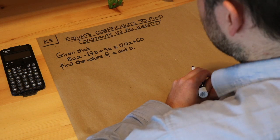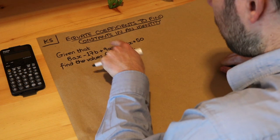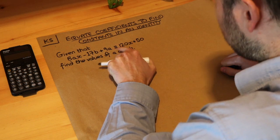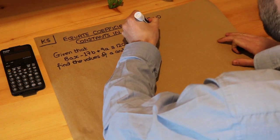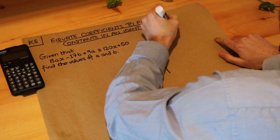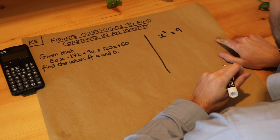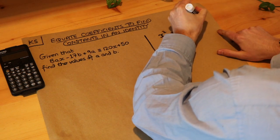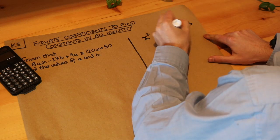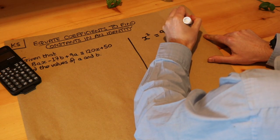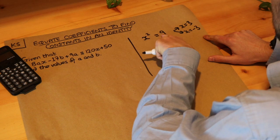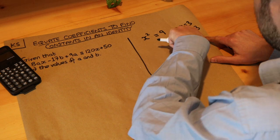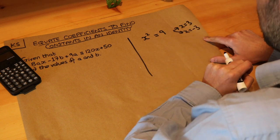What do we mean by identity? You can recognise it when you have this symbol here — the three horizontal strokes. It looks a bit like an equals but with an extra stroke. Now if we had an equation x squared equals 9 and you were asked to solve it, the values of x that work are x equals 3 and x equals minus 3. Those are the two solutions, because 3 squared is 9 and minus 3 squared is also 9. So for this equation we have particular values of x which satisfy the equation.